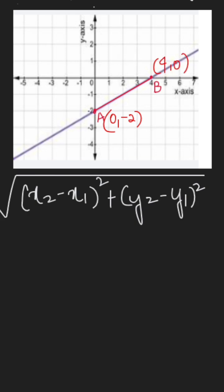Now we will apply this formula to find the length of the line AB. So the length of line AB is equal to x2 minus x1 whole square, which is the difference between the x coordinates, that is 4 minus 0 whole square, plus y2 minus y1 whole square. That means the difference between the y coordinates, that is 0 minus negative 2 whole square root.